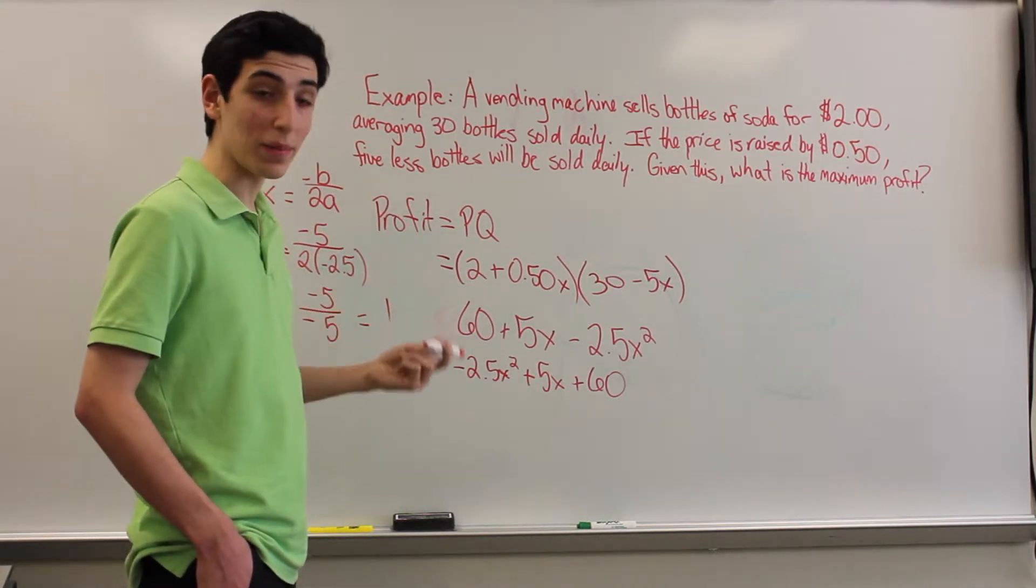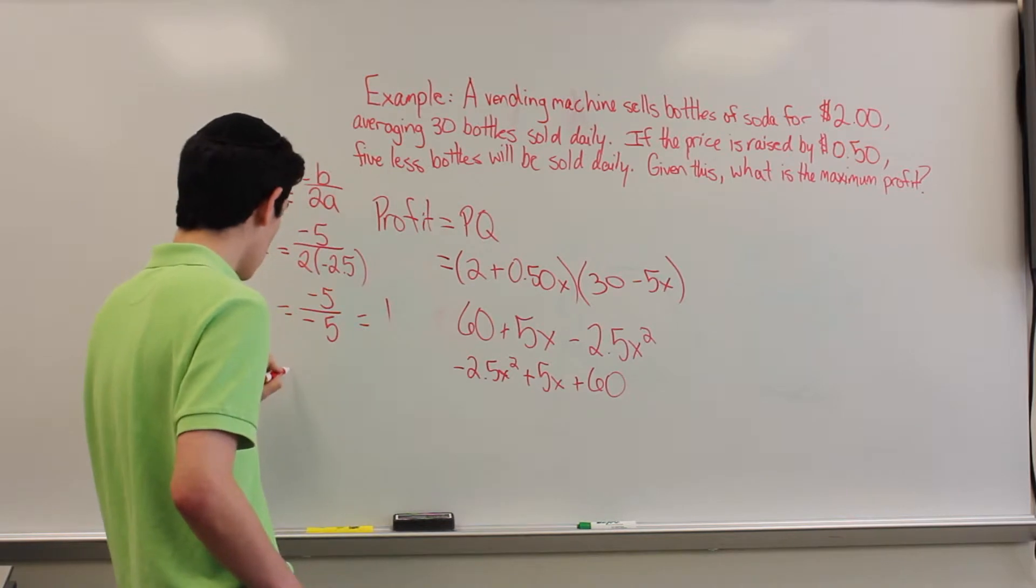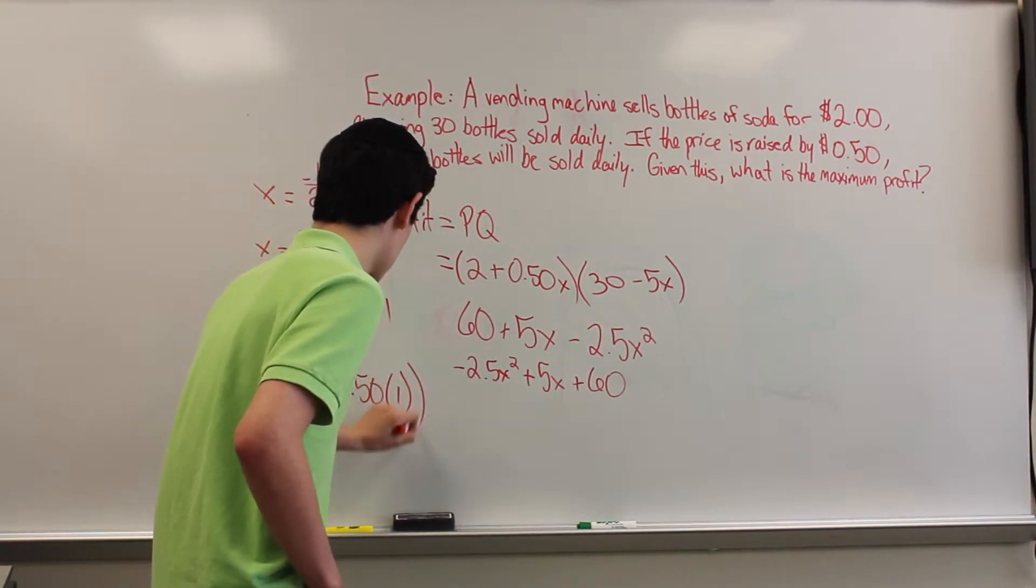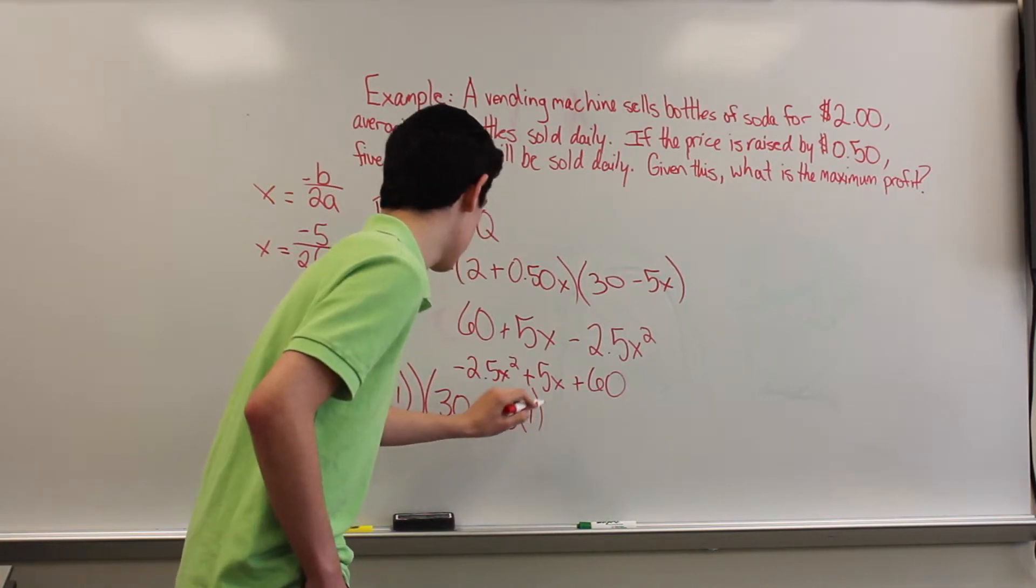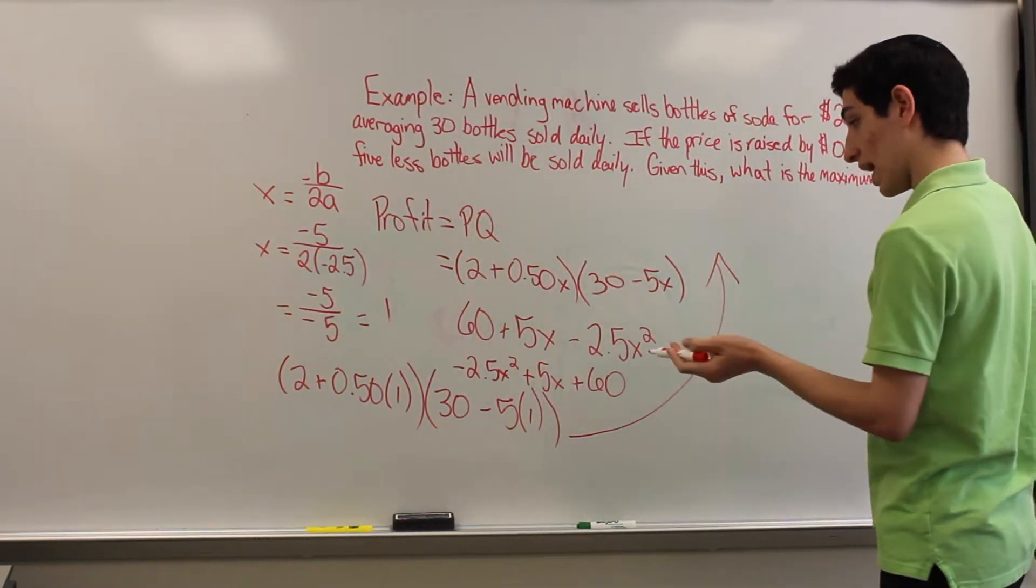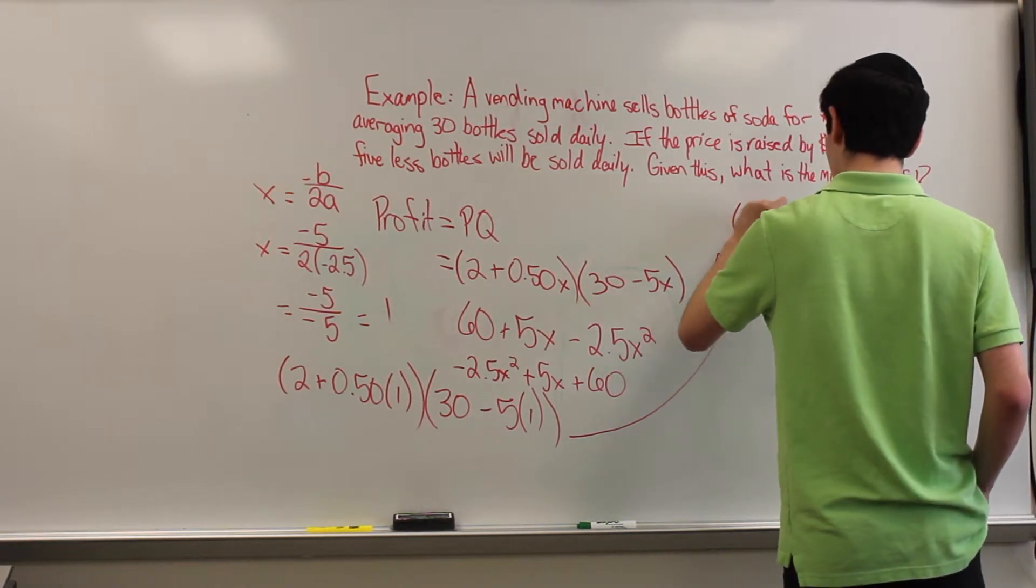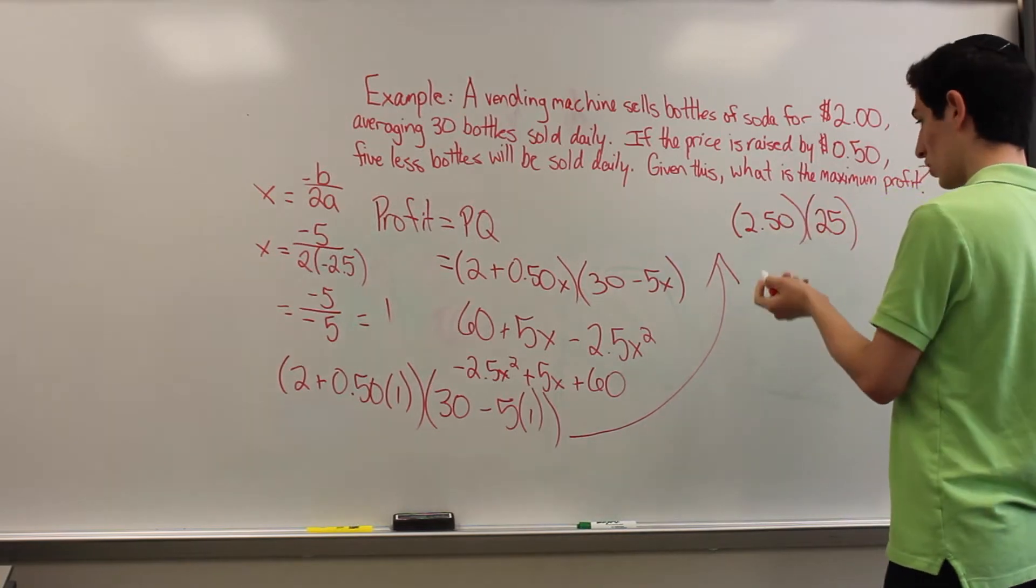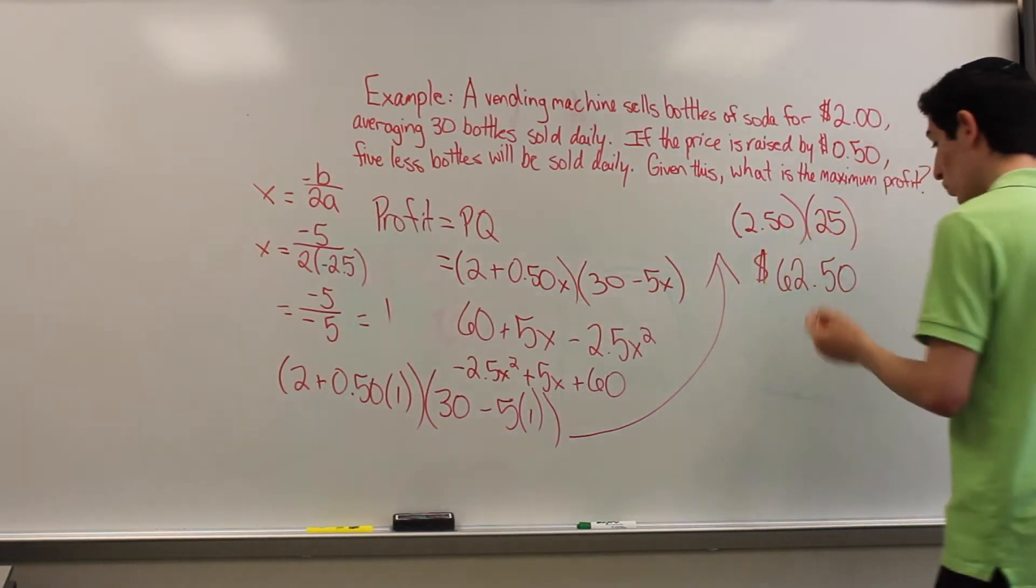So now if we plug 1 back into our original equation, we'll be able to find out what the maximum profit is. So we have 2 plus 50 cents times 1 times 30 minus 5 times 1. What we have is then 2 plus 50 cents, so 2 dollars and 50 cents times 25. And 2 dollars and 50 cents times 25 is 62 dollars and 50 cents, which is our maximum profit.